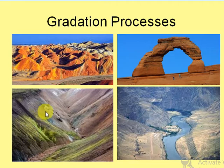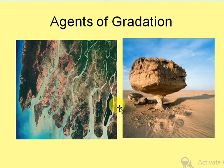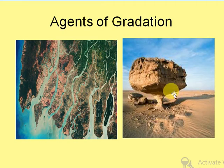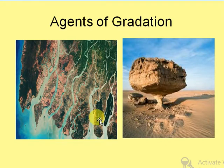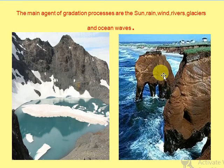The external forces which work very slowly and bring about changes on the Earth's surface include running water, wind, the action of sea waves, and the movement of winds which continuously strikes the rock and develops a typical feature known as the mushroom rock, especially found in deserts. The main agents of the gradation process — sun, rain, wind, rivers, glaciers, and ocean waves — have all developed different types of landforms.